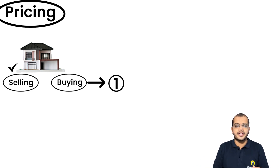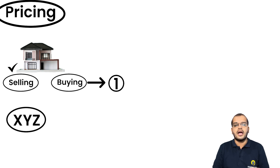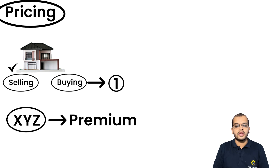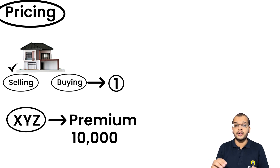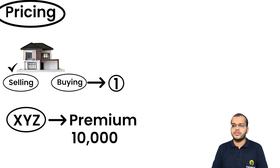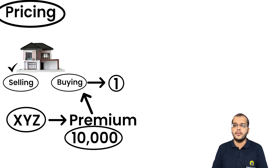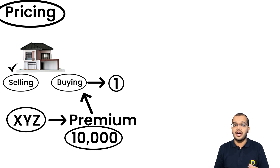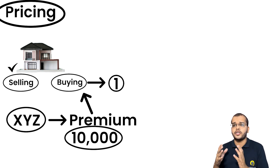Consider an XYZ real estate venture company. They offer a premium membership of around 10,000 rupees, which gives the buyer discounts or priority access when purchasing a villa, land, or home. Many companies give these kinds of offers, but let's move on and relate this to another finance sector example.